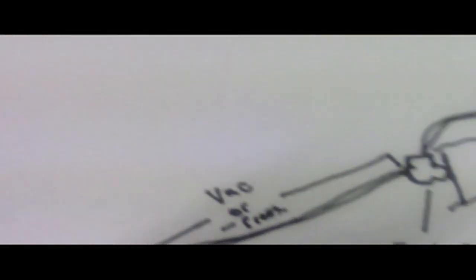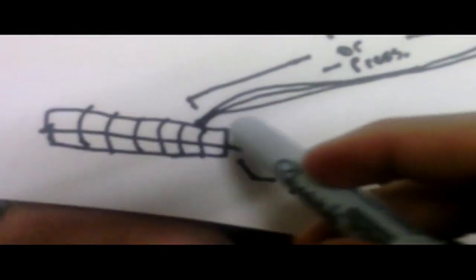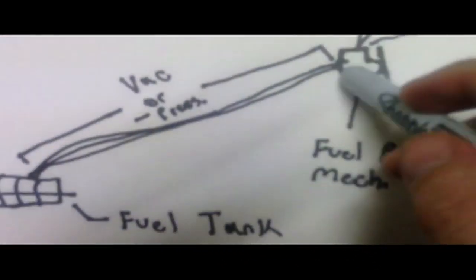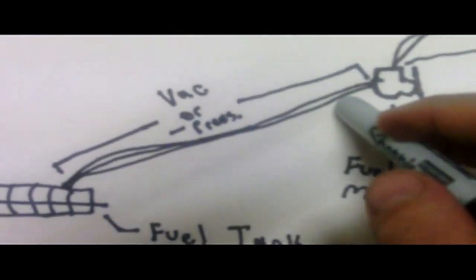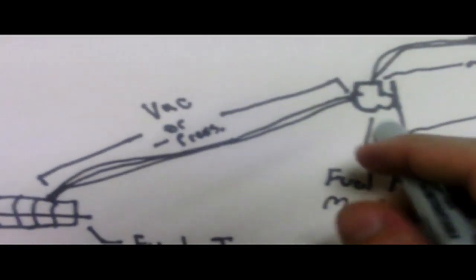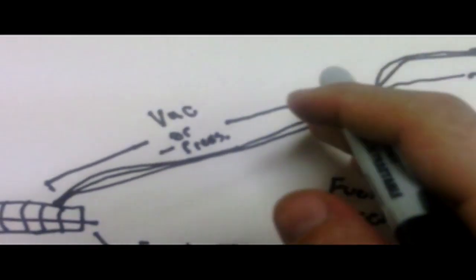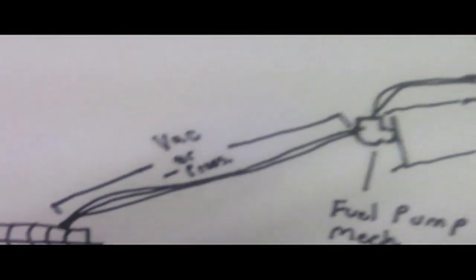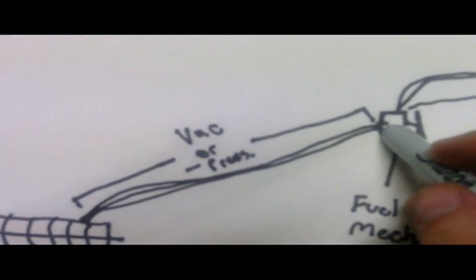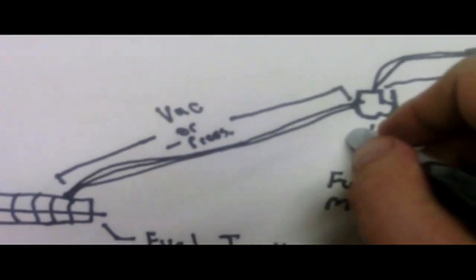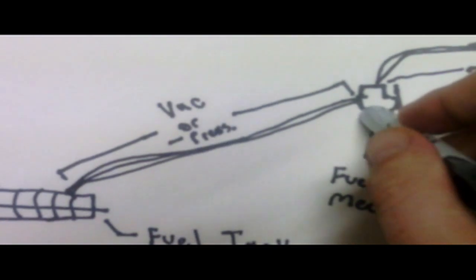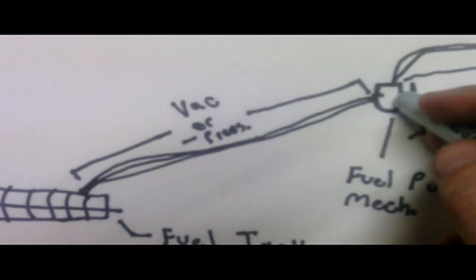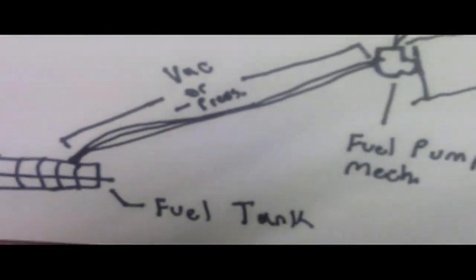So what would happen in this case, and this is how vapor lock occurs, you have fuel heating up as it gets closer to the fuel pump, and in a lot of cases, by the time it gets up here to the fuel pump, it's either at or above a temperature where liquid fuel can turn into vapor. Now these fuel pumps cannot pump vaporized gas, it has to have a liquid gas in it. So if you have nothing but vapor hitting the fuel pump, the fuel pump essentially can't pump anything.